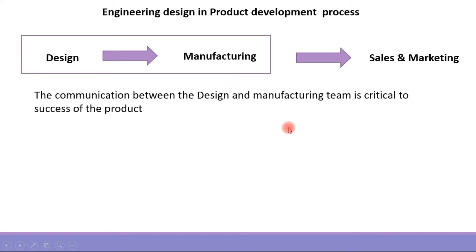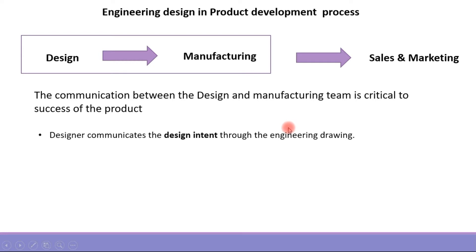In this process, the communication between the design and manufacturing team is critical to the success of the product, because whatever the designer has in mind, he has to specify it to the manufacturer, and the manufacturer has to understand what the designer has in mind. That is where the engineering drawing comes in — the designer communicates the design intent through an engineering drawing.